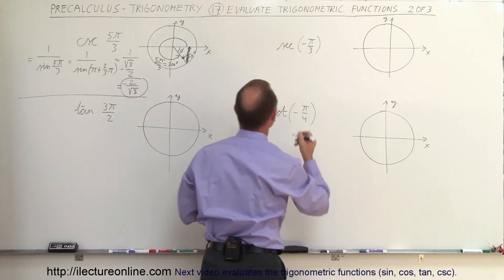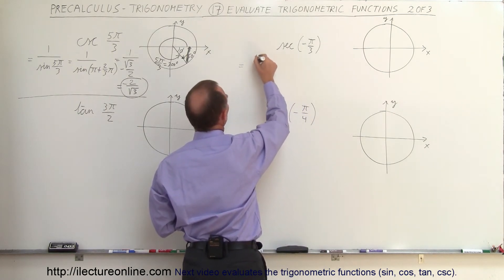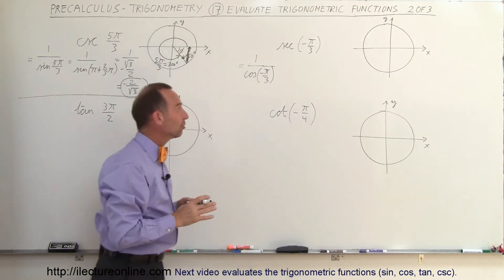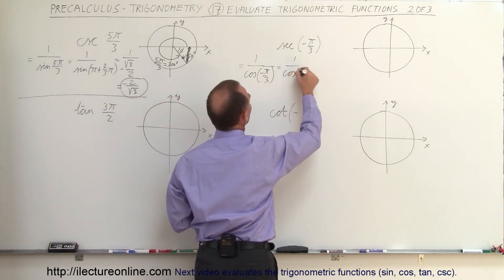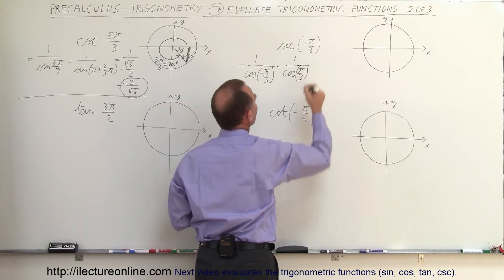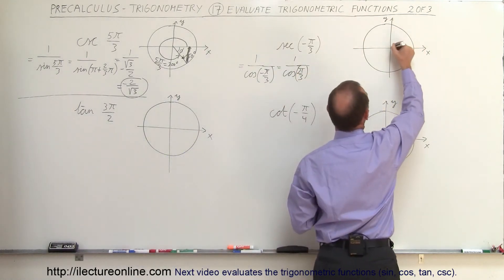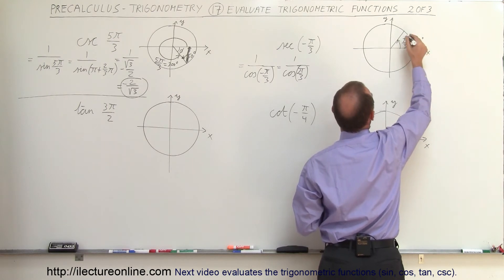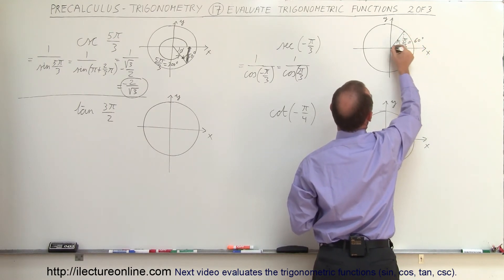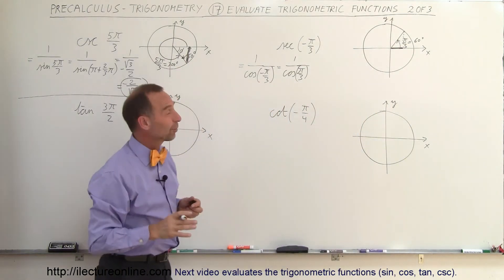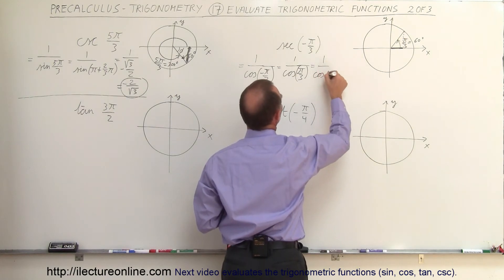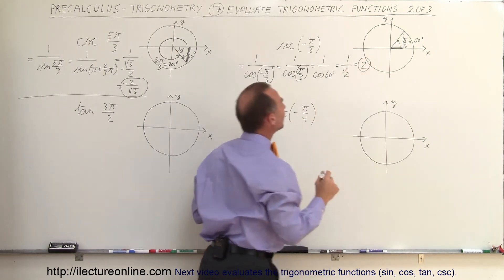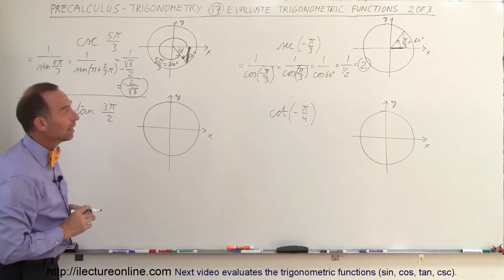Our next example: we have the secant of negative π over 3. Again we change that to a more familiar function — that's 1 over the cosine of negative π over 3. Since cosine is an even function, we can write this as 1 over the cosine of the positive angle π over 3, which is 60 degrees. The cosine of 60 degrees is 1/2, so this equals 1 over 1/2, and the inverse of that is 2. So the secant of negative π over 3 is equal to 2.